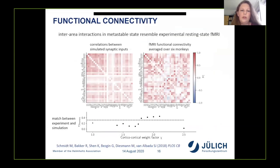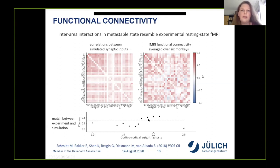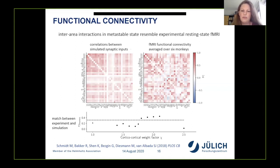We looked at area-level functional connectivity by comparing correlations between simulated synaptic inputs to each area with fMRI functional connectivity from macaque. The comparison reveals a match that peaks around the same strength of inter-area connections where the microscopic spiking activity was most realistic. This match between simulation and experiment is as good as can be expected based on variability between individual monkeys, indicating that we are capturing some aspects of resting state activity of the cortex.